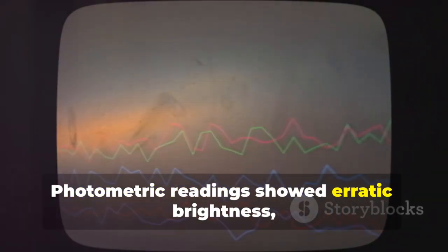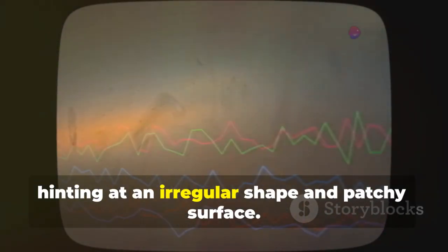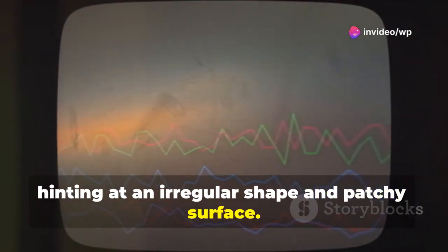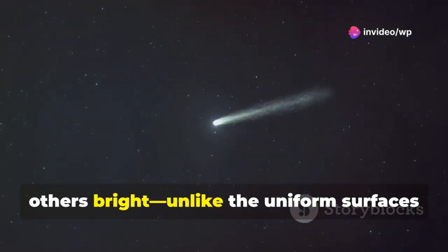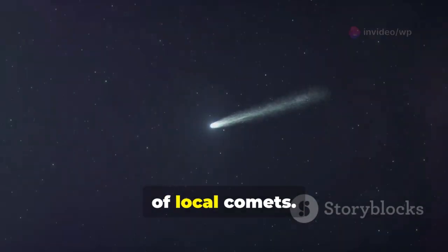Photometric readings showed erratic brightness, hinting at an irregular shape and patchy surface. Some regions are dark, others bright, unlike the uniform surfaces of local comets.